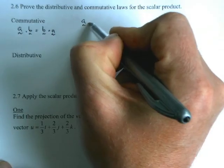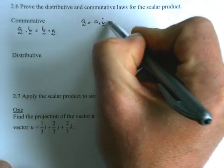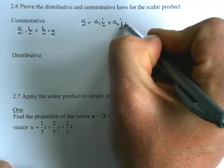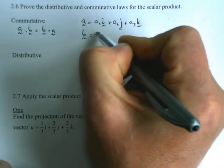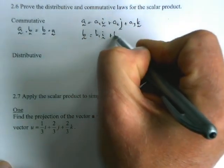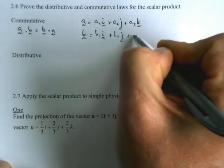You just say let a equal a₁i plus a₂j plus a₃k and b equal obviously b₁i plus b₂j plus b₃k.